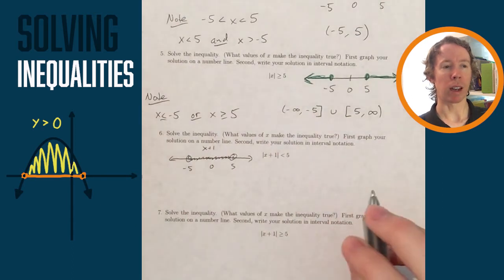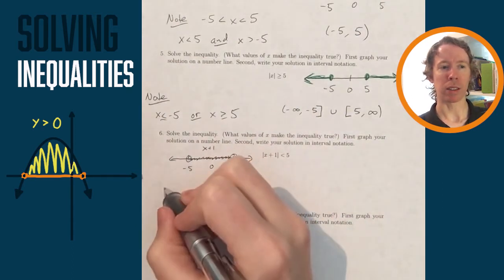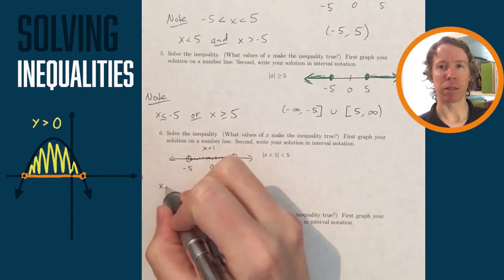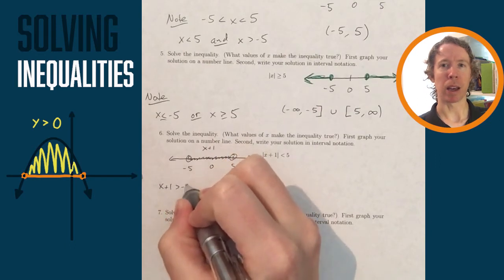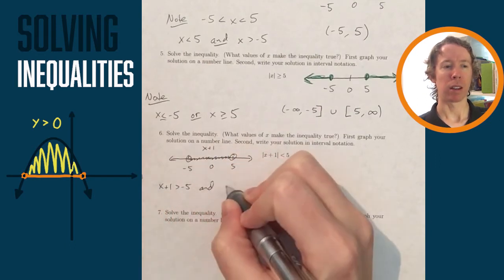So another way to write that is x plus 1 has to be less than 5, and at the same time, x plus 1 has to be greater than negative 5.